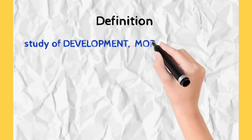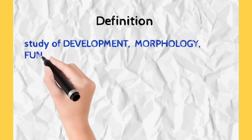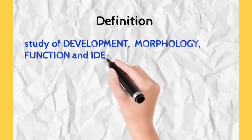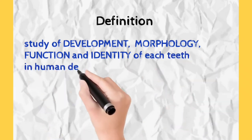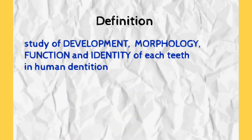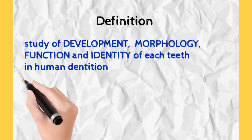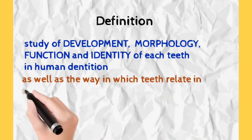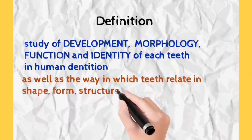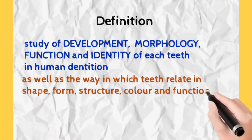Definition of Dental Anatomy as per Wheeler's is that it is study of development, morphology, function, and identity of each teeth in human dentition. Development means how does teeth grow, morphology means how does teeth appear, function is what teeth do, and identity means how can we identify which tooth is which.